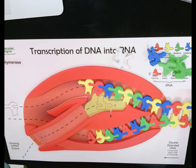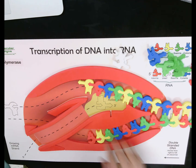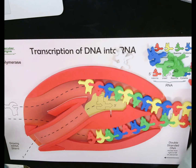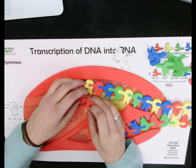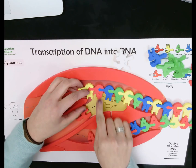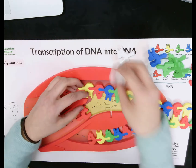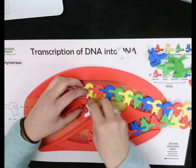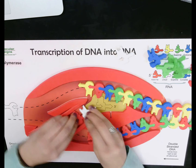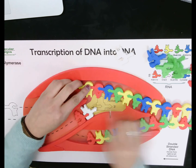After RNA polymerase unzips the DNA molecule, it combines to make those complementary nucleotides. So right here we have a T, and T pairs with A — but in RNA this would be a U.